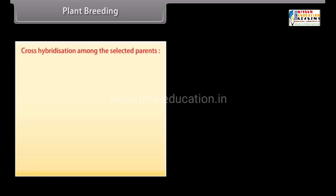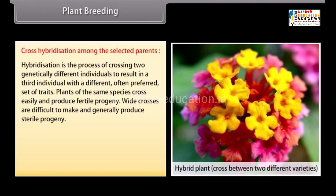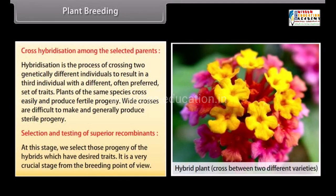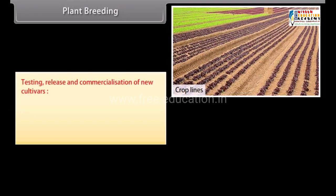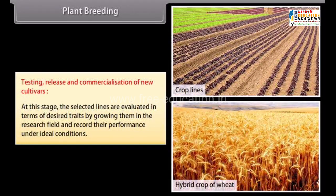Evaluation and selection of parents involves choosing plants with unique traits the breeder wants combined in one plant. Cross hybridization is the process of crossing two genetically different individuals to result in a third individual with a different, often preferred, set of traits. Plants of the same species cross easily and produce fertile progeny, while wide crosses are difficult and generally produce sterile progeny. Superior recombinants are then selected, tested in research fields, and evaluated under ideal conditions before release and commercialization.